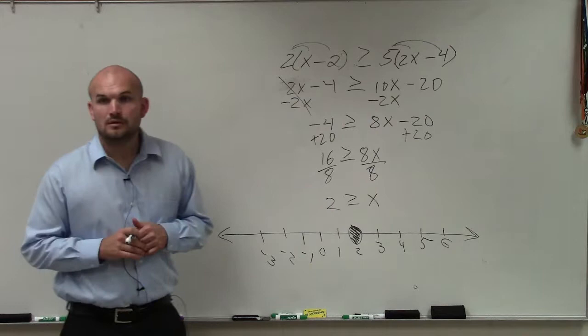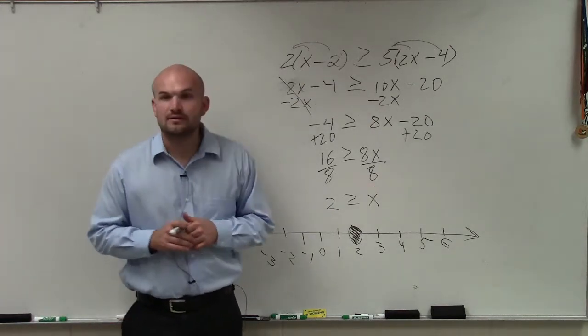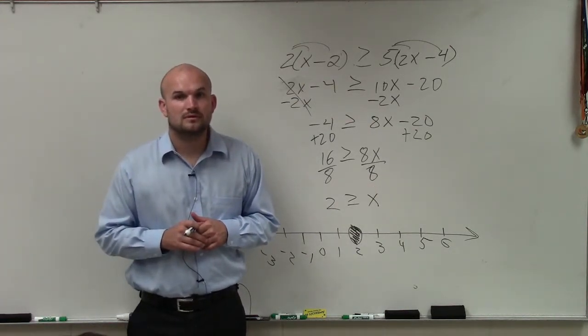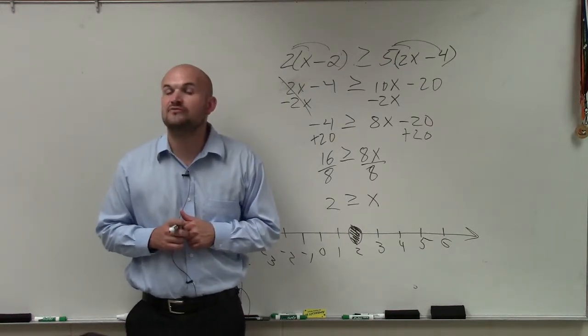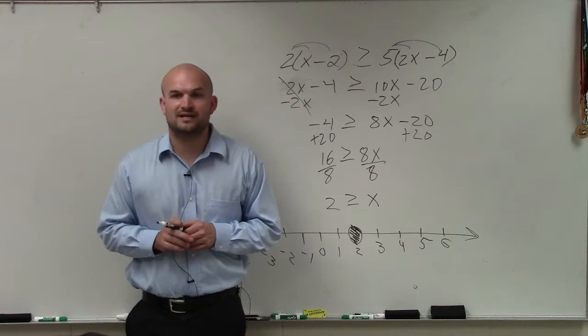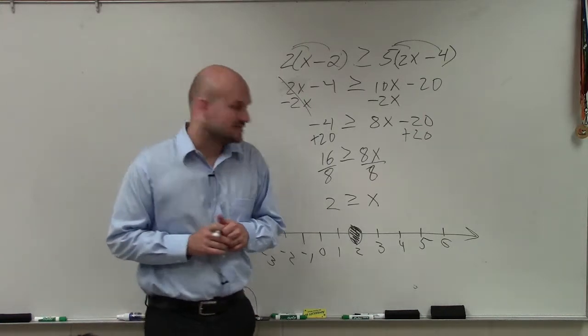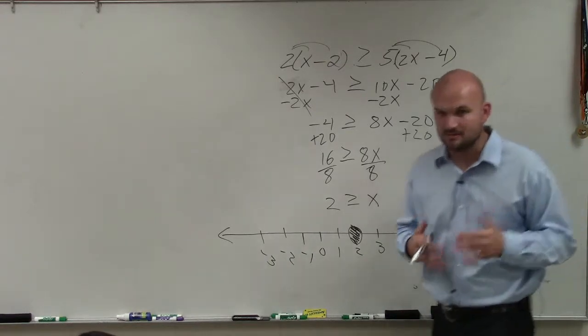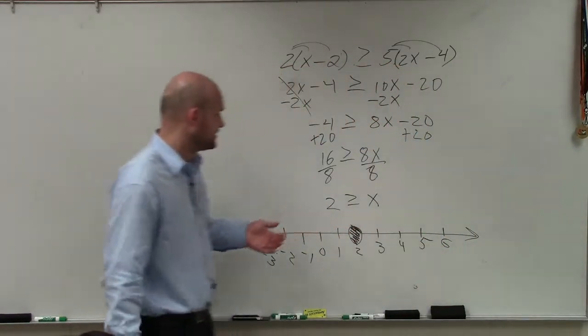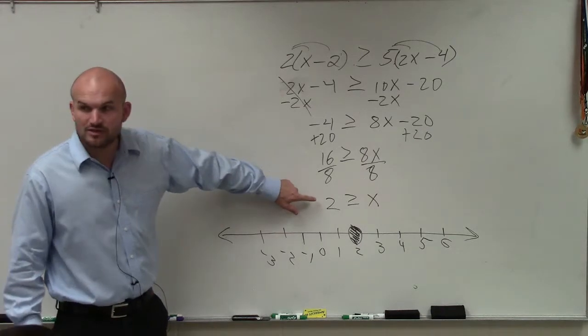It should be x is less than. You probably didn't flip the sign when you divide it by a negative number, right? That's why I always say to get positive, because we always forget flipping the sign. But if you remember it, it's not a problem to do it that way.